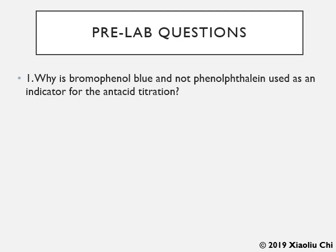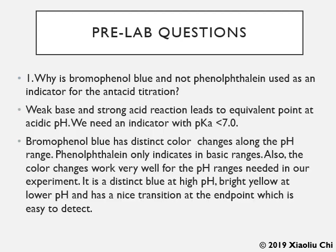Pre-lab Question 1: Why is bromophenol blue and not phenolphthalein used as an indicator for the antacid titration? At the endpoint of this titration, the solution is slightly acidic, so we need an indicator that changes color under slightly acidic conditions — and bromophenol blue does that. In addition, bromophenol blue has a distinct color change across the pH range: it is clearly blue at high pH, bright yellow at low pH, and shows a clear transition at the endpoint, which is easy to detect.